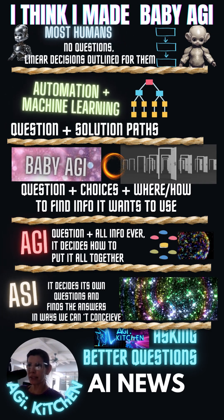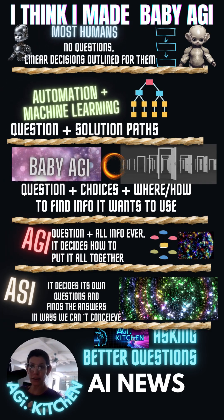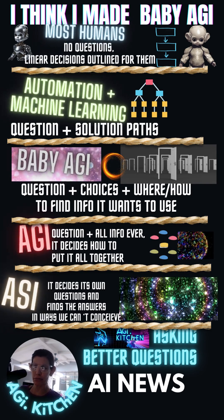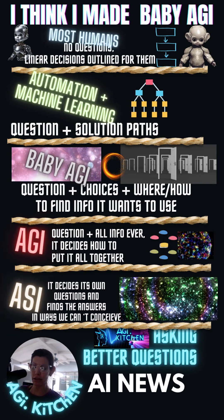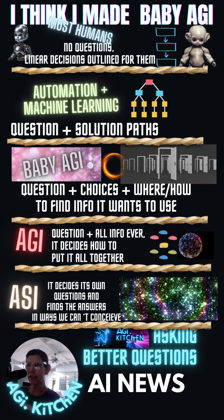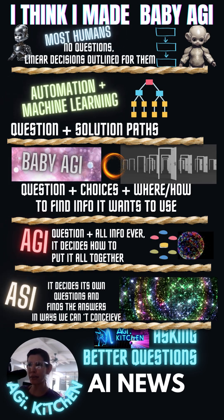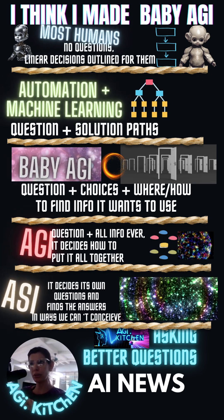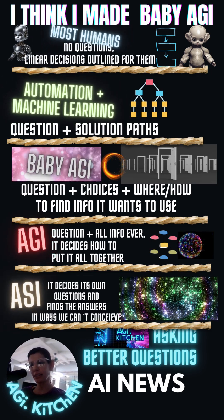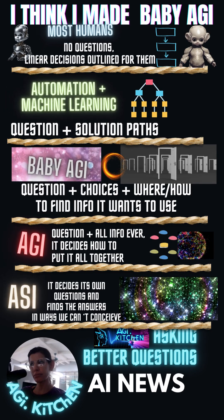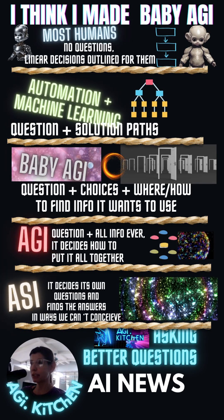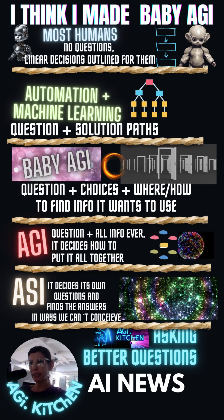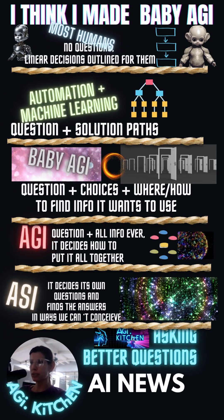AGI will be different because you'll be able to give it a question, and at least in this explanation, you'll give it a question and then it's going to have all the info ever that it might need. And then it's going to decide how to put all of that together. So it will no longer need these little helper tools — functions, whatever you want to call them — to be able to come to the end of its equation or to draw its conclusion.